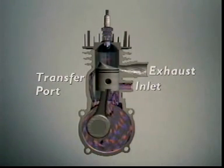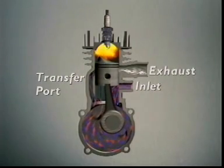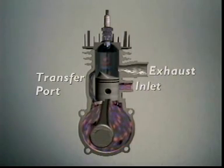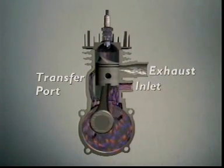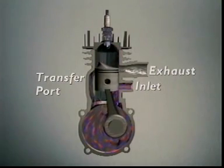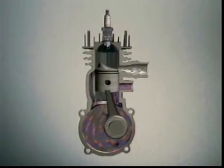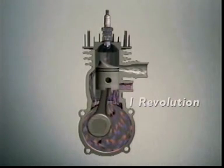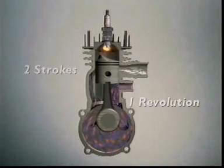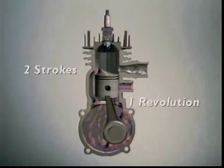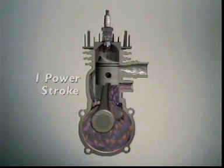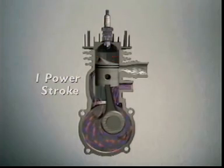The whole process is a cycle: a new mixture enters and is ignited, combustion occurs, expanding gases drive the piston down and turn the crankshaft, which pushes the piston back up the cylinder. In one two-stroke cycle, the crankshaft does one revolution. In that one revolution, the piston makes two strokes, and only one of those two strokes delivers energy to the crankshaft.